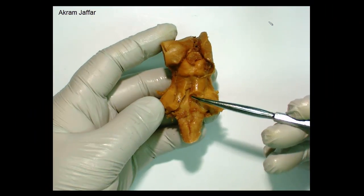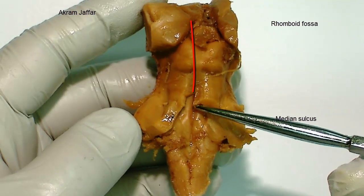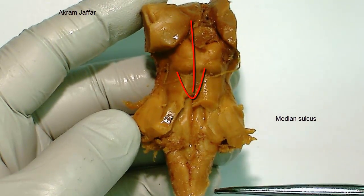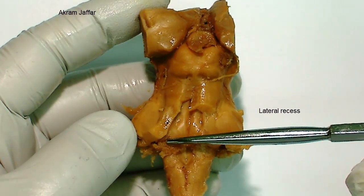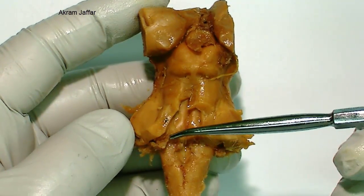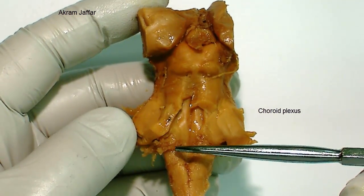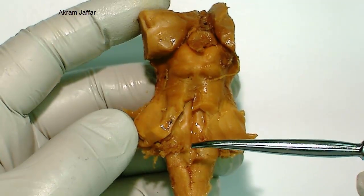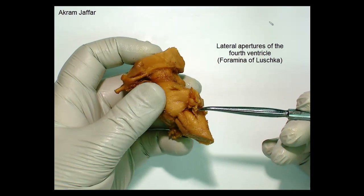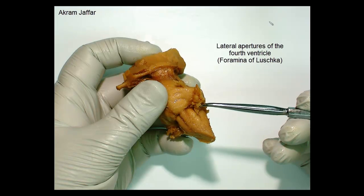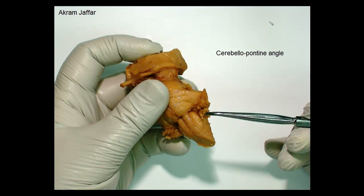If we look at the floor of the fourth ventricle, we see it is diamond in shape — that is why this region is called the rhomboid fossa. There is a median sulcus that divides it into two halves. At the lateral recess, we can see a collection of choroid plexus. This choroid plexus of the fourth ventricle passes through the lateral recess and appears anteriorly through the lateral foramen of Luschka, which connects the fourth ventricle with the subarachnoid space at the region of the cerebellar pontine angle.